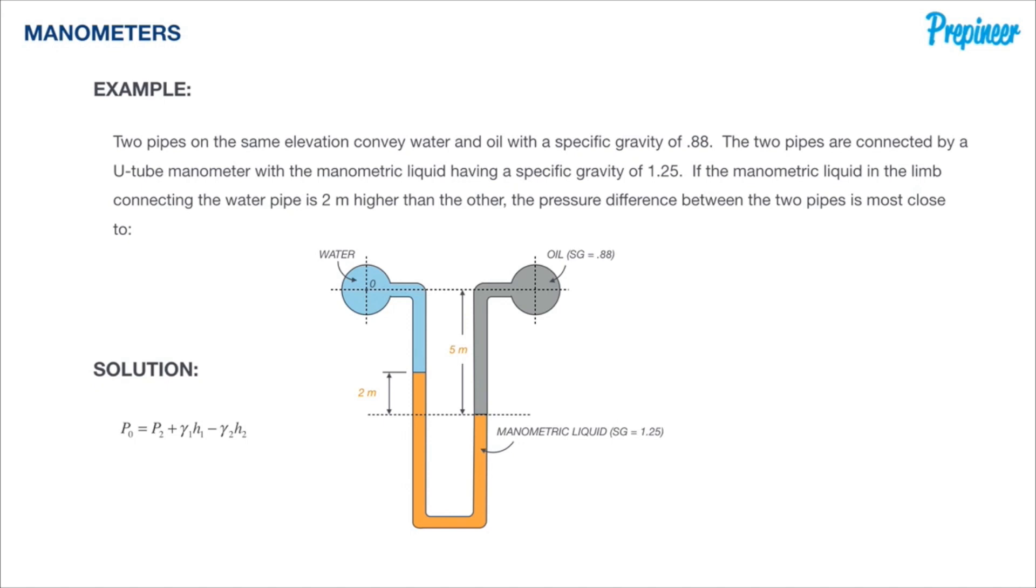In our problem we are asked to determine the pressure difference between the two pipes based on the information that we are given. So we will start at the center point of our water pipe which I just denoted with zero, working downward to the top of our manometric liquid which I denoted with 0.1, then around the bend and up to the top of the manometric liquid in the right limb, and finally upwards to the center of our oil pipe.